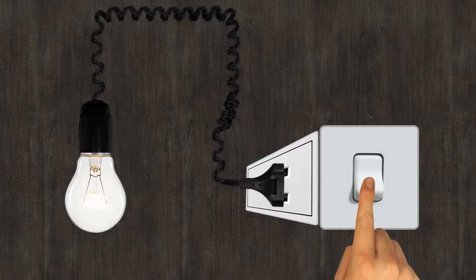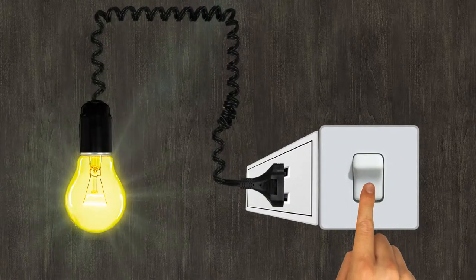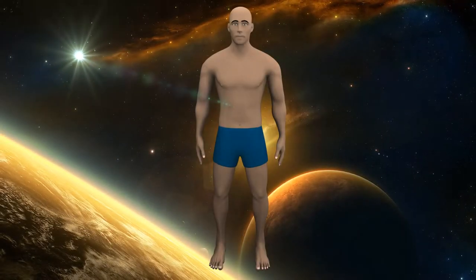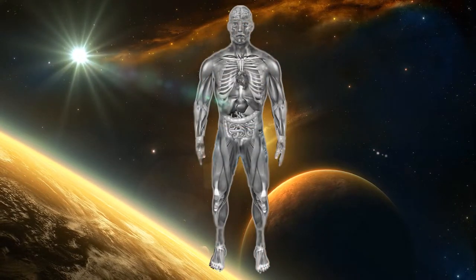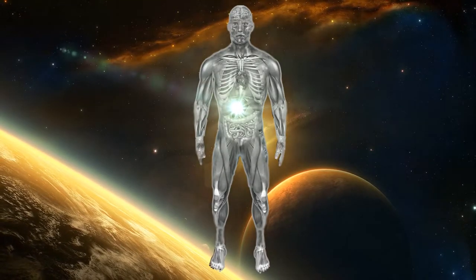As an electric machine requires electricity to work, similarly our Annamaya kosh or visible physical body requires prana to live. Parts or organs of our body don't have their own power to work. It is the Pranamaya kosh which controls the functioning of our body.